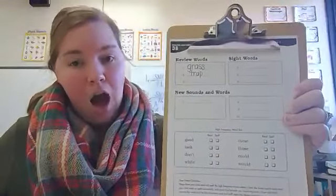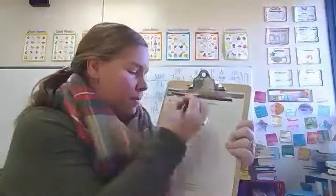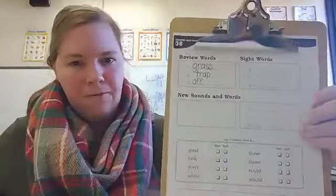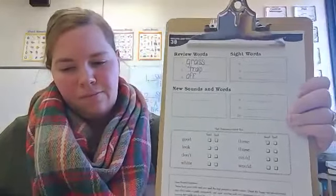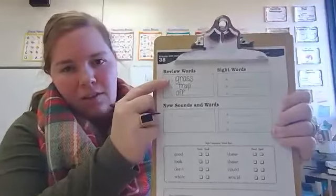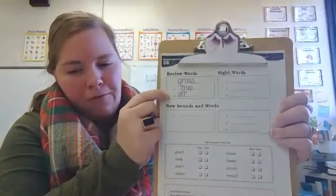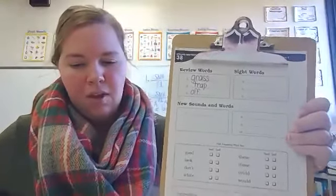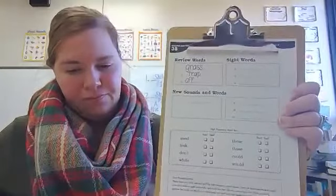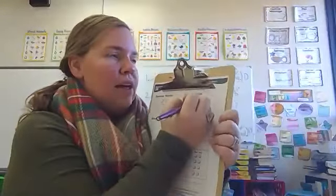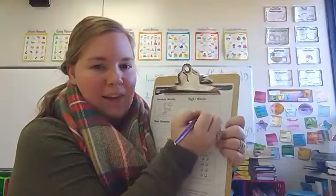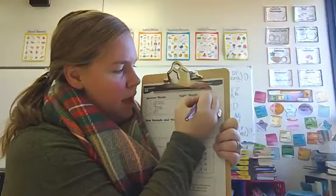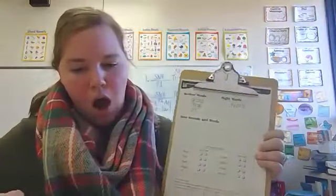Number three, off. Off — O-F-F. Grass, trap, off. Now let's practice spelling some sight words. Number four, there — like, there will be a sunny day. There — T-H-E-R-E.